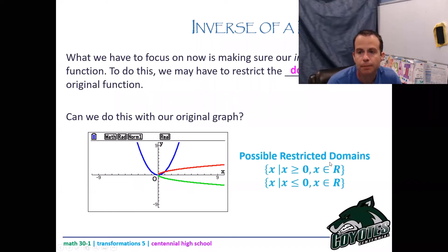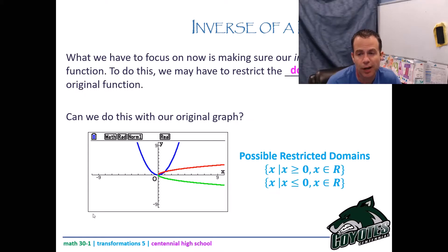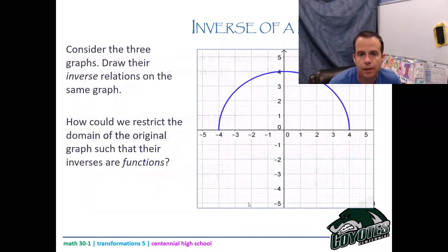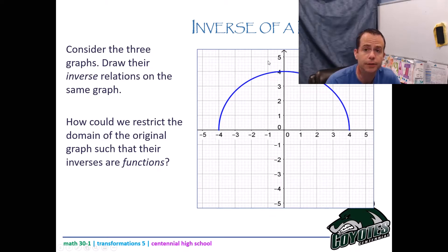Possible restricted domains: x is greater than or equal to zero, or x is less than or equal to zero — both are acceptable. I can include zero in both because at zero I still haven't changed direction. Now consider the three graphs — draw their inverse relations on the same graph. Then determine how we could restrict the domain of the original graph such that the inverses are a function.